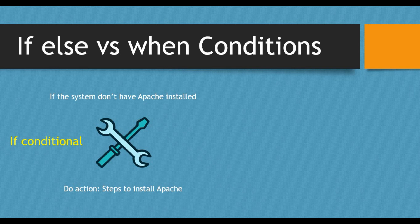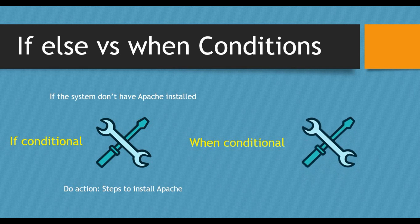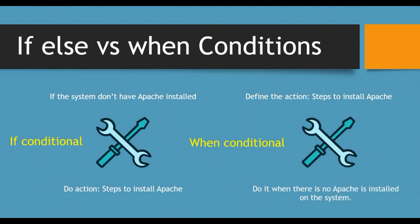In Ansible, using the 'when' condition, you write the steps or action first — for example, the steps to install Apache — and then you say: do this when there is no Apache installed. Even though you've written the steps, they won't run unless the 'when' condition is met. That's the difference. It accomplishes the same thing, but the 'when' condition approach is a solid option.